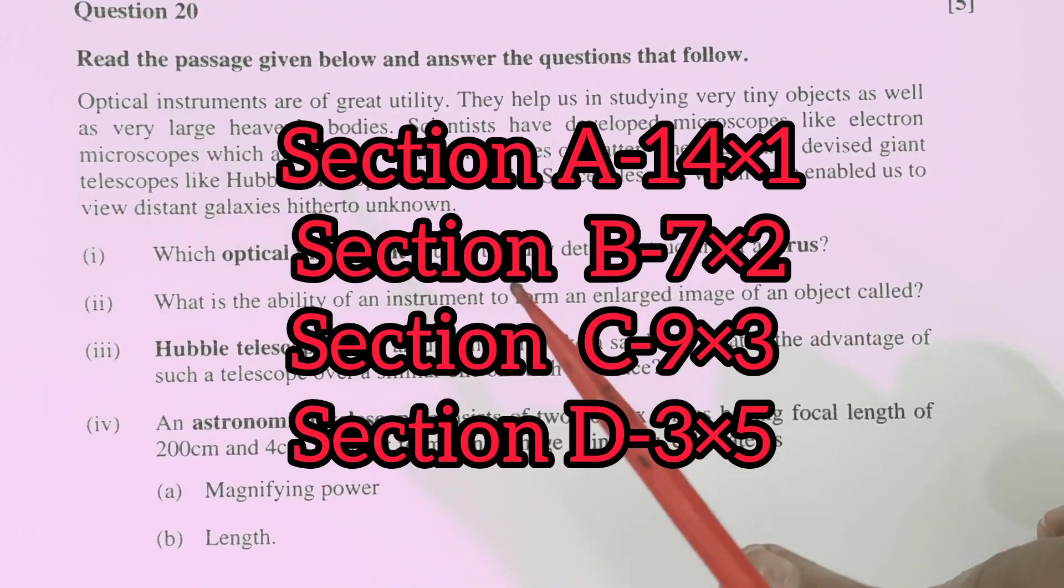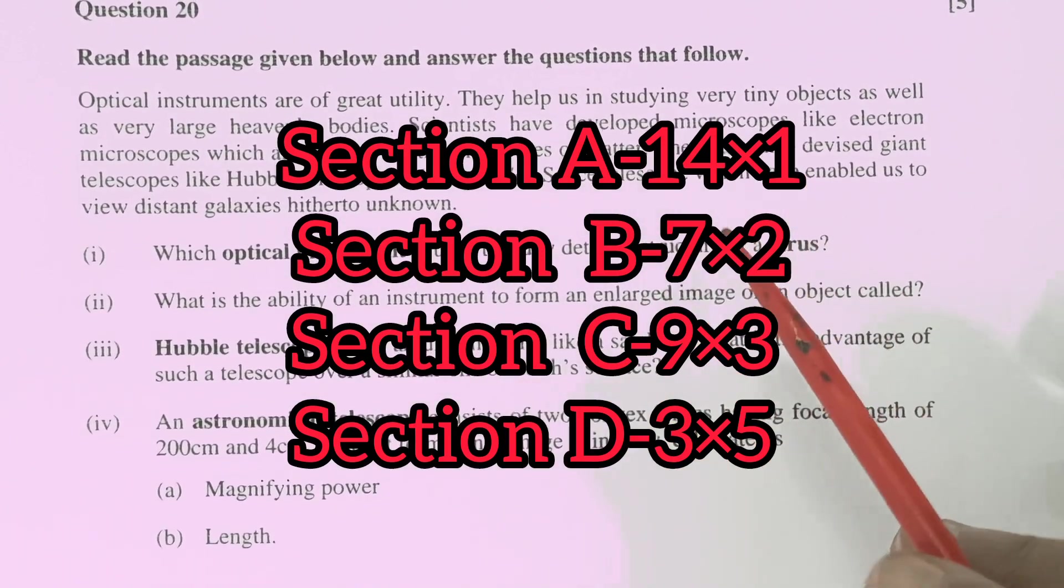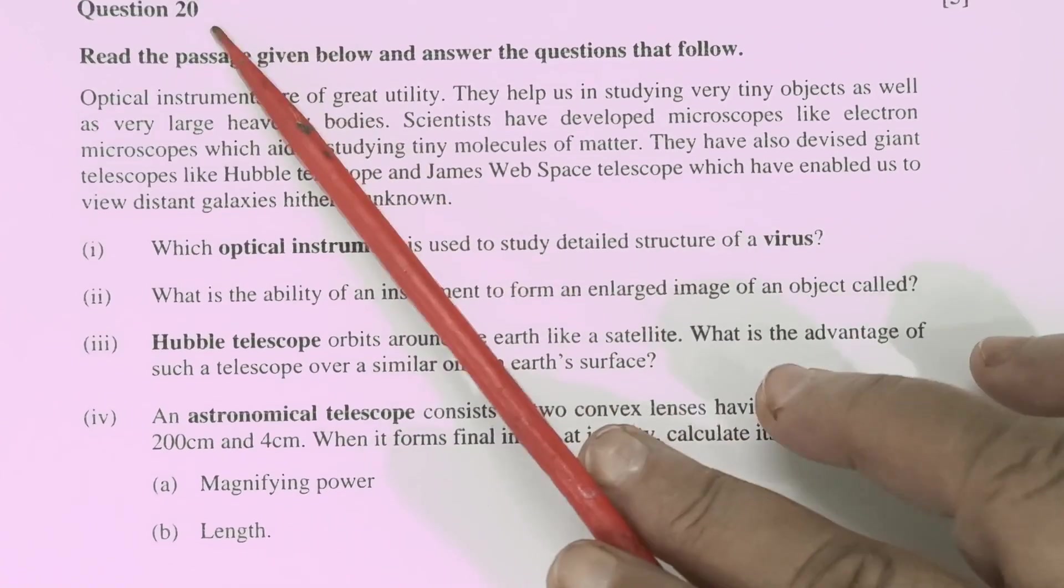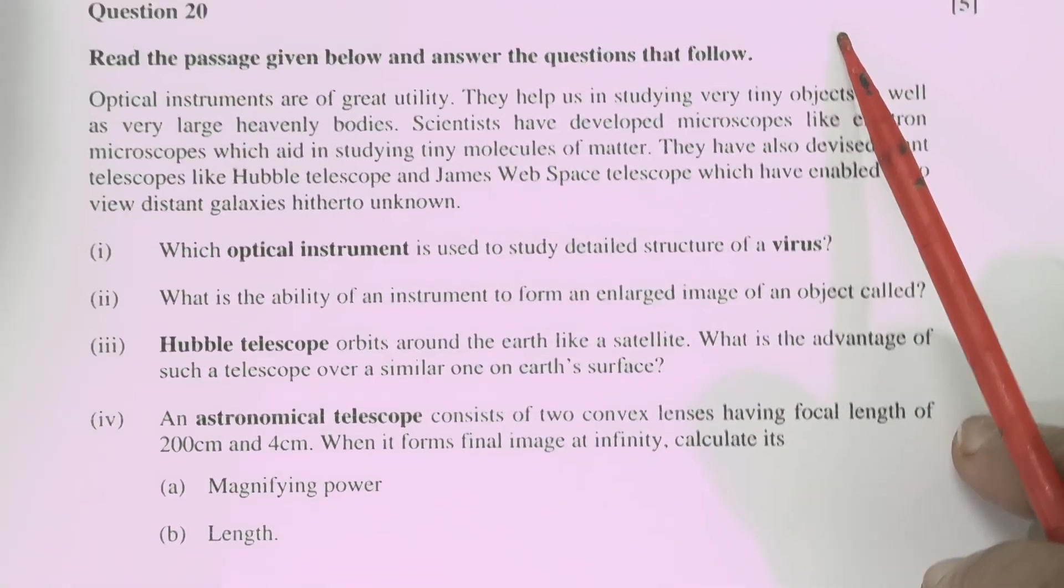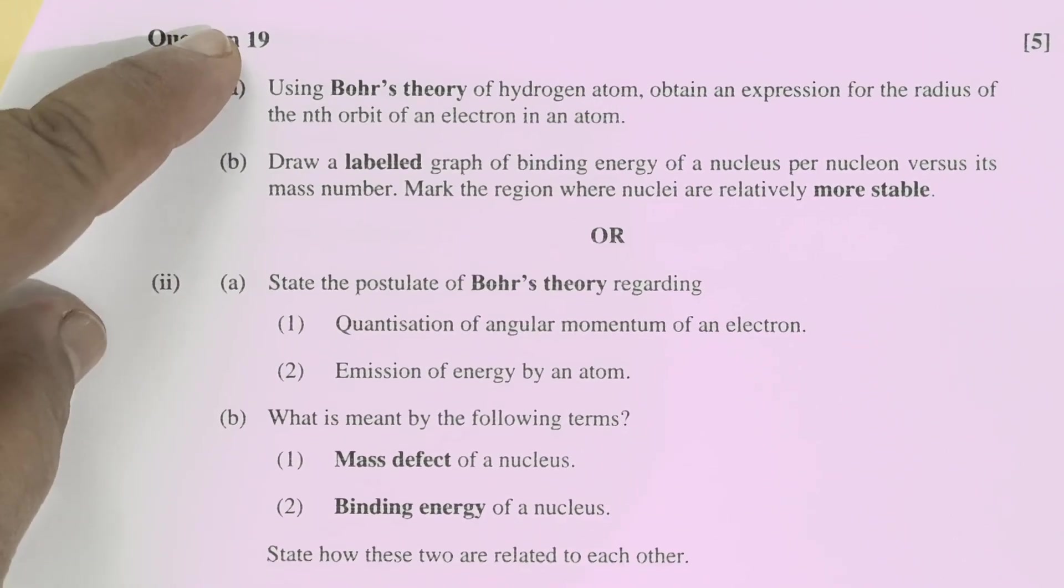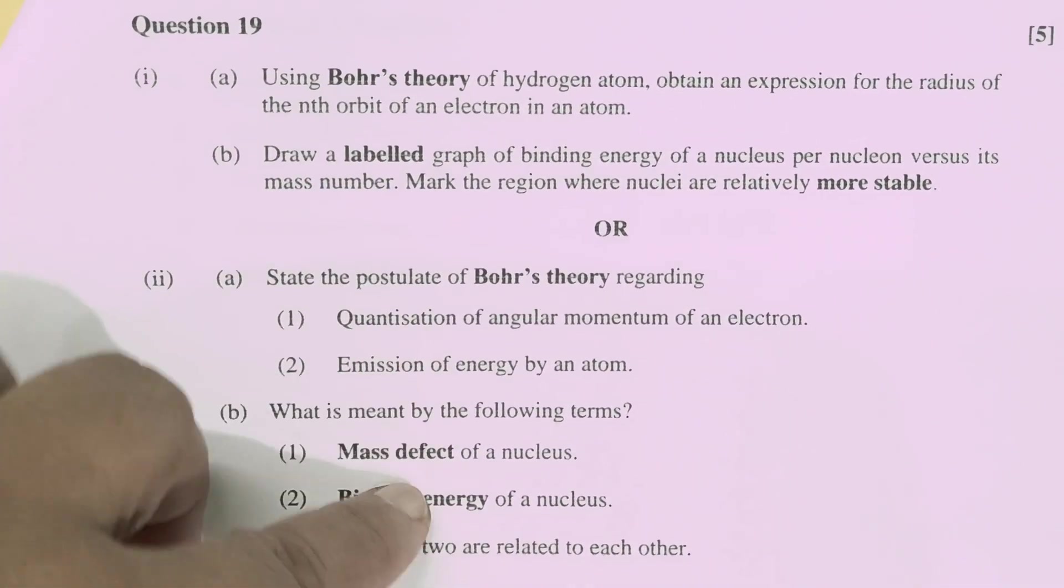In section B, section C, section D, you will have choice only question number 20 which is having paragraph. This question is not having the choice but rest of the two are having choice either attempt this or attempt this.